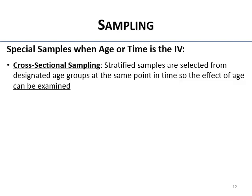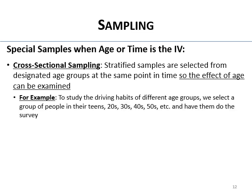There are also special samples when age or time is the independent variable. Cross-sectional sampling is when stratified samples are selected from designated age groups at the same point in time so you can look at the effect of age. For example, you select groups of people in their teens, 20s, 30s, 40s, and 50s and have them all do your survey at one time — comparing different people from different age groups at one point in time. That's a cross-sectional sample.